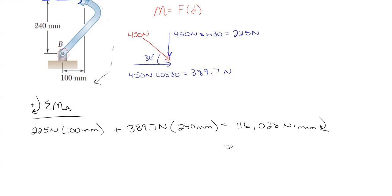You could leave your answer as that, or you could just divide it by 1,000, and we end up with 116.03 after rounding kilonewtons millimeter of clockwise rotation about point B. And that would be how you would work that particular problem.